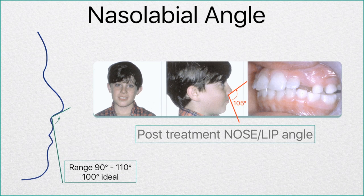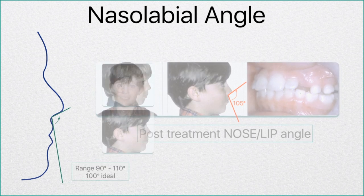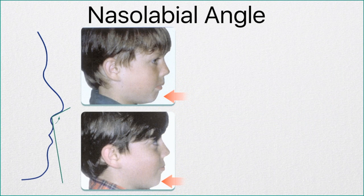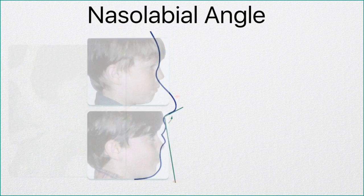You can also see the dramatically improved nose lip angle, which is now 105 degrees — considered inside the ideal range. The mandible has come forward rather dramatically; his chin is much more prominent, which is a wonderful thing both aesthetically and functionally. You're going to see that in a moment.